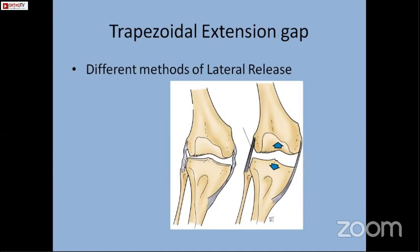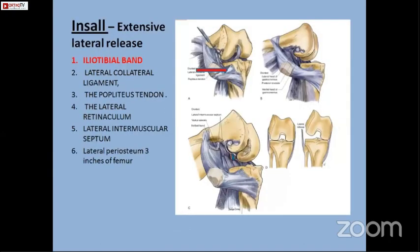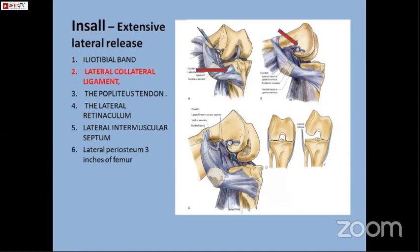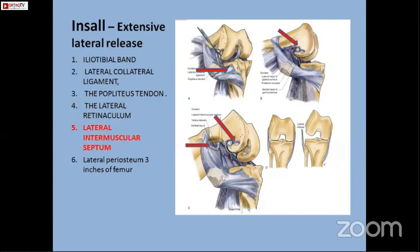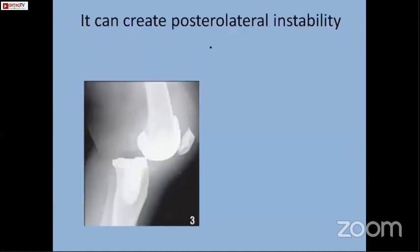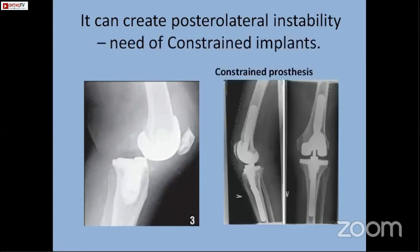In grade 2 deformities where the MCL is intact, Insall described an extensive lateral release in his literature, beginning from the iliotibial band, the lateral collateral ligament, the popliteus tendon, lateral retinaculum, and as high as the lateral intermuscular septum. But in these cases of severe lateral release, there can be a possibility of posterolateral instability of the tibial component, where a constrained prosthesis may be needed to address the situation.